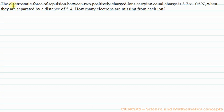The question is: the electrostatic force of repulsion between two positively charged ions carrying equal charge is 3.7 × 10^-9 Newton.